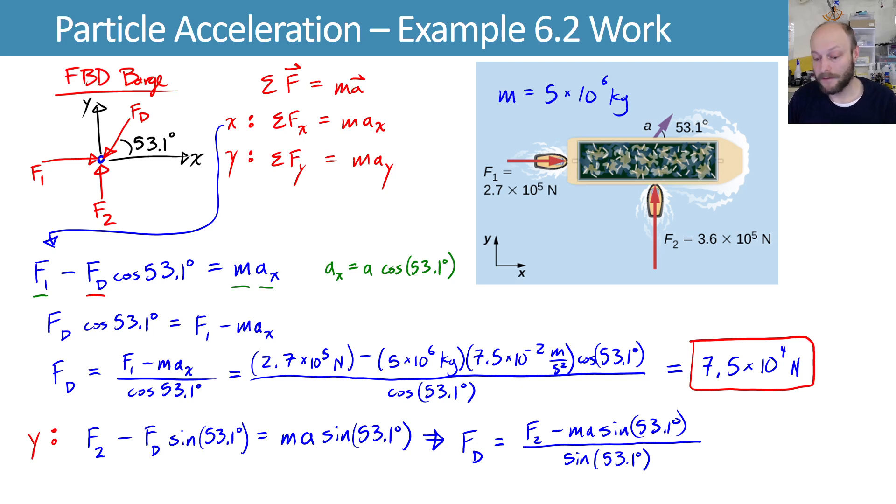And as I was mentioning, if we had an unknown angle, then you could have taken this, which would have had an unknown fd and unknown theta, and this equation, which would have had unknown fd and unknown theta, and combined them and solved two equations, two unknowns.